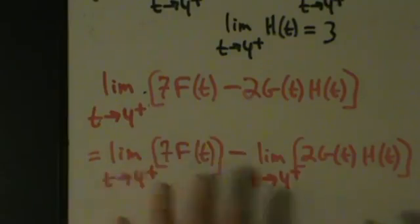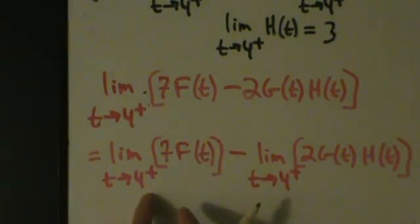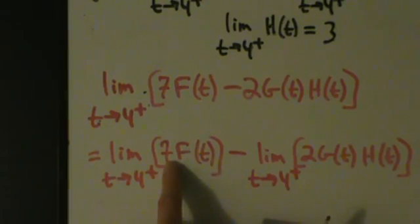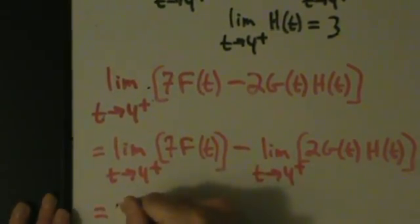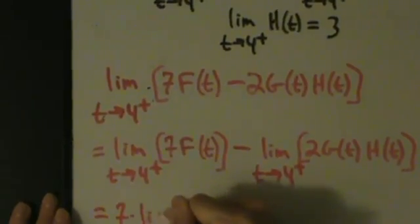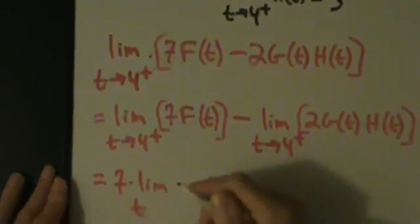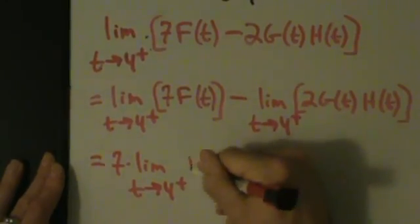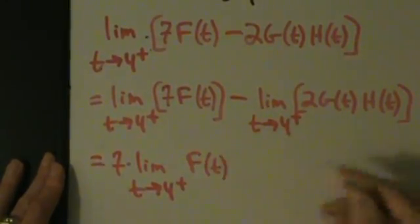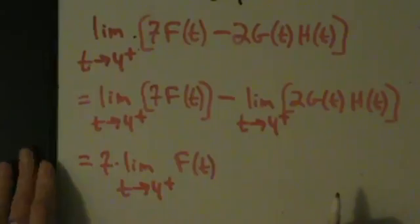Now let's look at each one of these separately. So first, limit as t approaches 4 from the right of 7 times F of t. 7 is just a constant, so we can just pull it out of the limit. So this equals 7 times limit as t approaches 4 from the right of F of t. So that's the first term there.